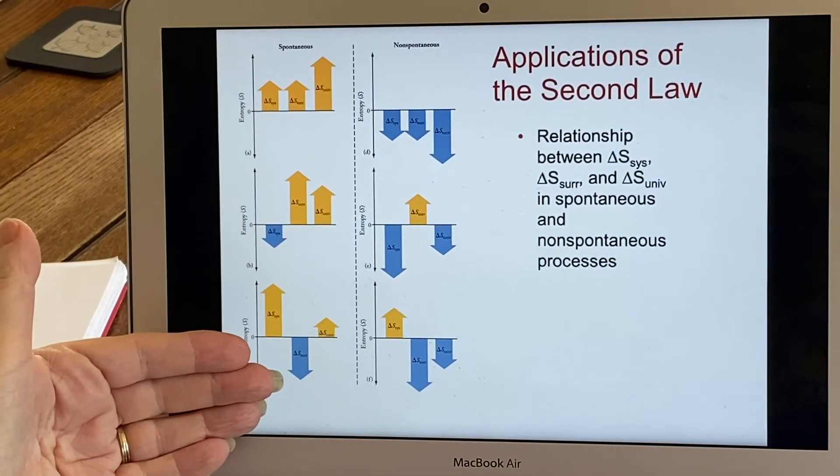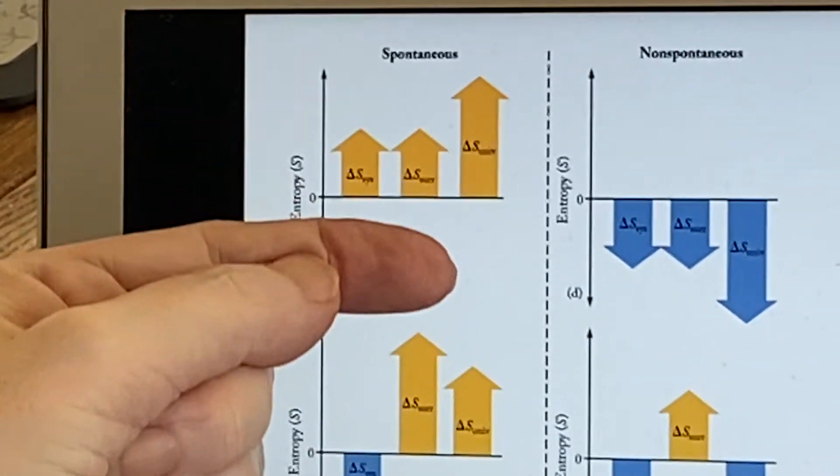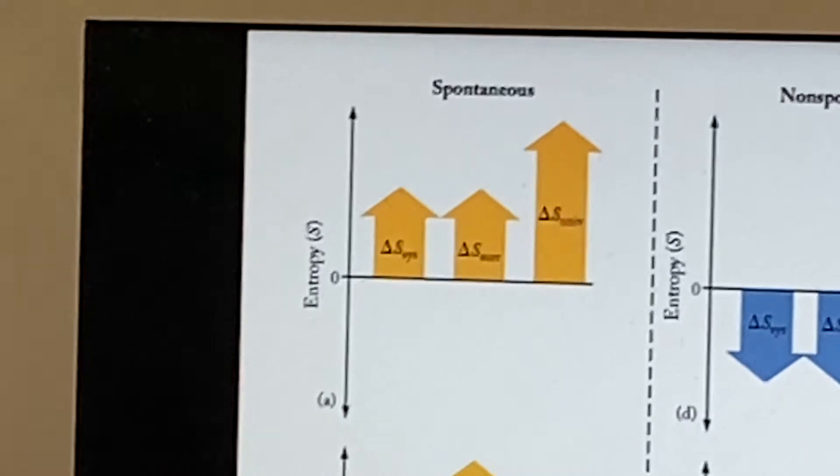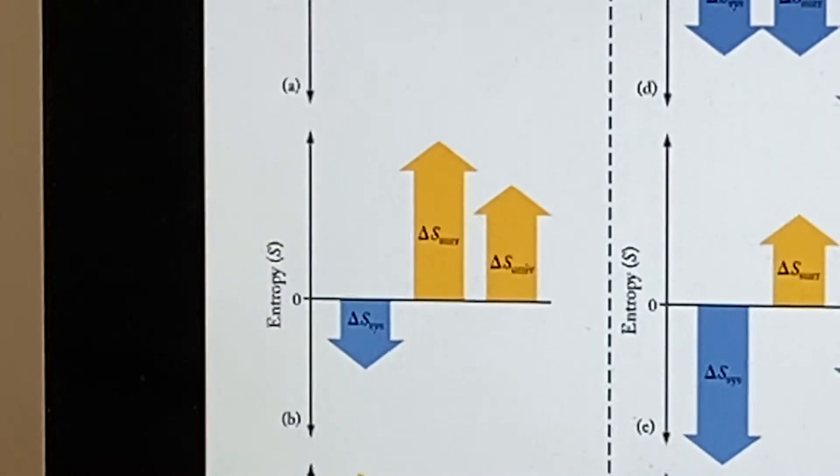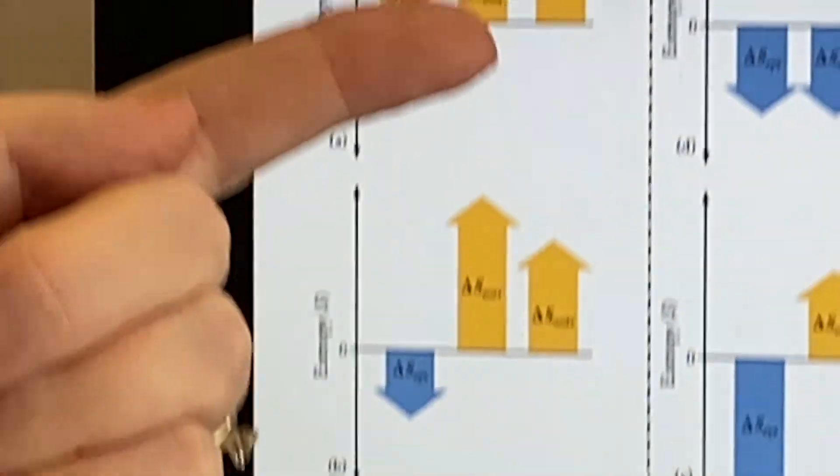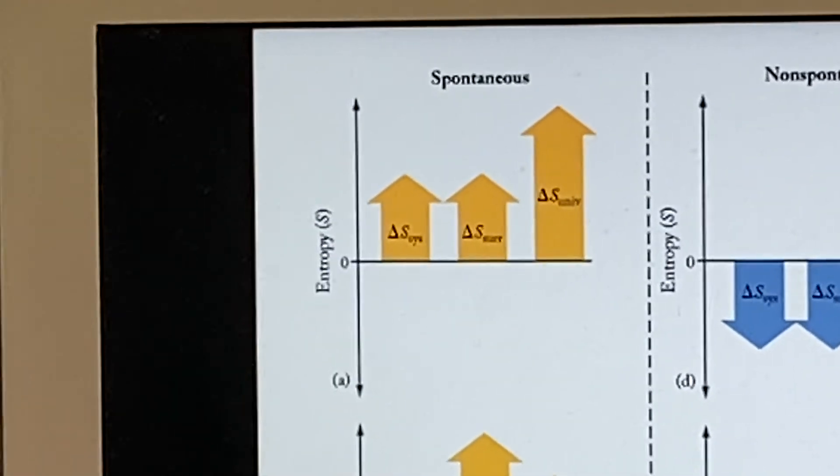Here we have the possibilities for something that is spontaneous. The orange arrow upward here, the third one, is delta S of the universe. These would be spontaneous situations. Well, this one, it's obvious. The system and the surroundings are both positive. So of course delta S of the universe is positive.